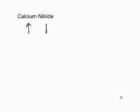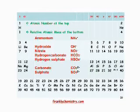Calcium nitride: the ending -ide alerts us to the fact that it's an element on its own. So we have nitrogen on its own — this is not nitrate or nitrite. We look for calcium and nitrogen ions using the periodic table.